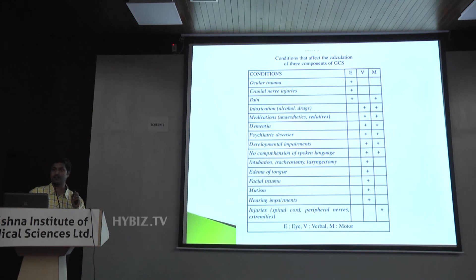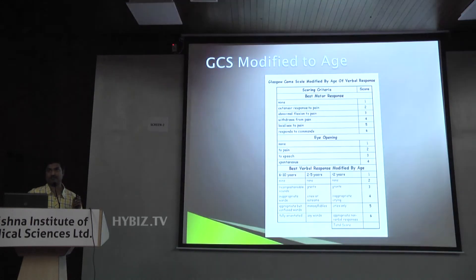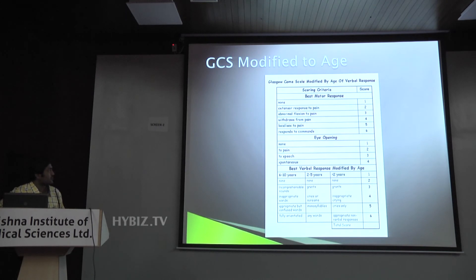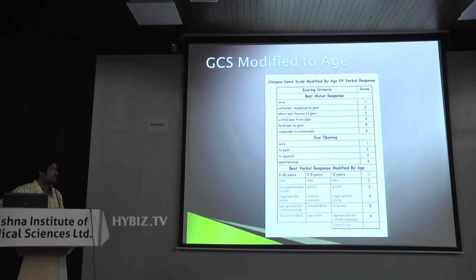If the patient is below 4 or 5 years, you will have to use an alternative score — this is the modified score for children. The motor response and eye opening are nearly the same, but you need to remember them differently. For the verbal response, it changes.